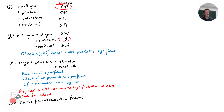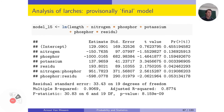Interaction terms are only checked for the predictors already in the model. In our model we have nitrogen, potassium, phosphor, and residual ash, so we check all combinations: nitrogen with potassium, nitrogen with phosphor, nitrogen with residual ash, potassium with phosphor, potassium with residual ash, and phosphor with residual ash. We select the most significant and continue the process. The final result is model L5, which contains nitrogen, phosphor, potassium, and residual ash, plus two interaction terms: nitrogen with phosphor, and phosphor with residual ash.